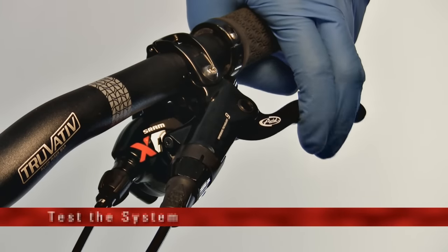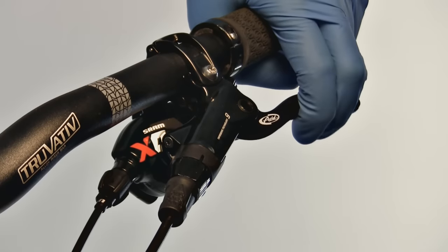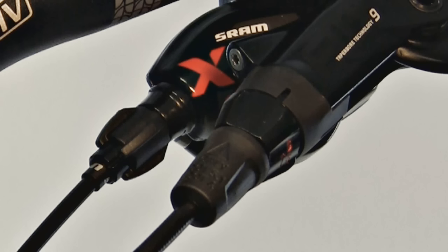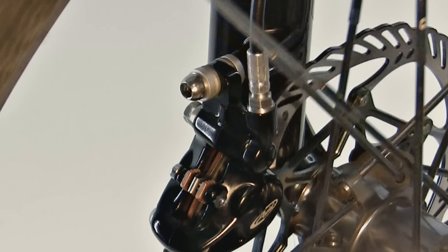Test the system. Pull on the lever very firmly several times. Make sure to look around the hose nut on the lever and the banjo bolt on the caliper for any leaks. Make one last check of all the bolts and fittings.